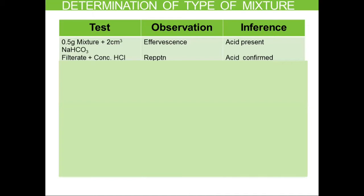For determination of type, we will do the tests studied earlier: the test for an acid, phenol, base, and a neutral component. We take about 0.5 grams of the sample and add two centimeter cubes of sodium bicarbonate and check for effervescence — the making and breaking of bubbles. For this mixture, we did get a positive test and observed effervescence. Hence, we infer that an acid is present.